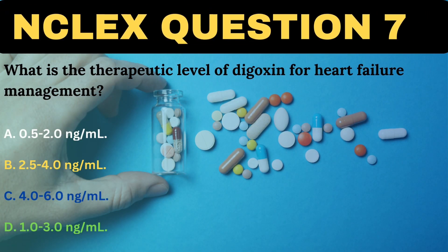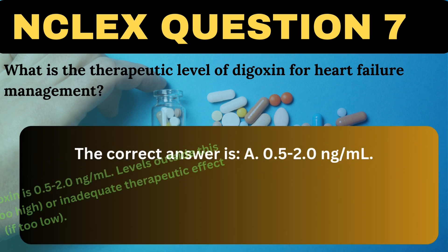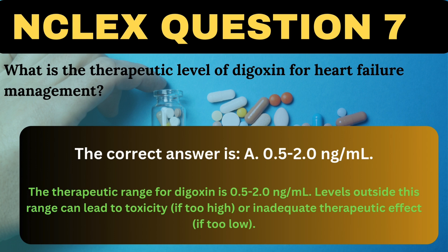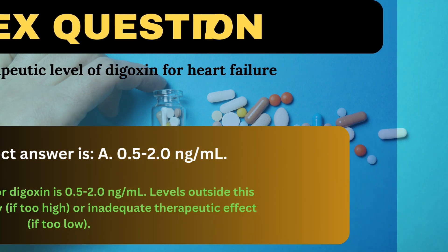What is the therapeutic level of digoxin for heart failure management? A. 0.5 to 2.0 ng per ml. B. 2.5 to 4.0 ng per ml. C. 4.0 to 6.0 ng per ml. D. 1.0 to 3.0 ng per ml. The correct answer is A, 0.5 to 2.0 ng per ml. The therapeutic range for digoxin is 0.5 to 2.0 ng per ml. Levels outside this range can lead to toxicity if too high, or inadequate therapeutic effect if too low.